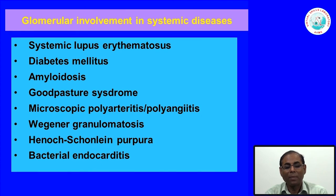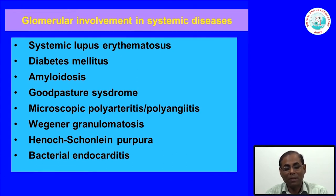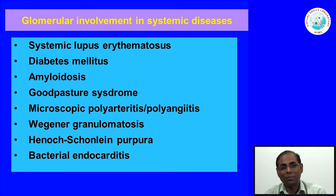Today we will discuss kidney involvement in important diseases: systemic lupus erythematosus, a common systemic autoimmune disease; diabetes mellitus, which is a huge problem in India; amyloidosis; and Goodpasture syndrome. We will also mention other collagen vascular diseases that can involve the kidney, like microscopic polyangiitis, Wegener's granulomatosis, Henoch-Schönlein purpura — the systemic IgA disease — and bacterial endocarditis.